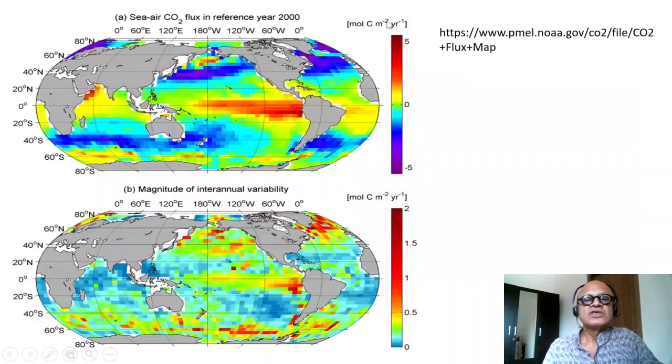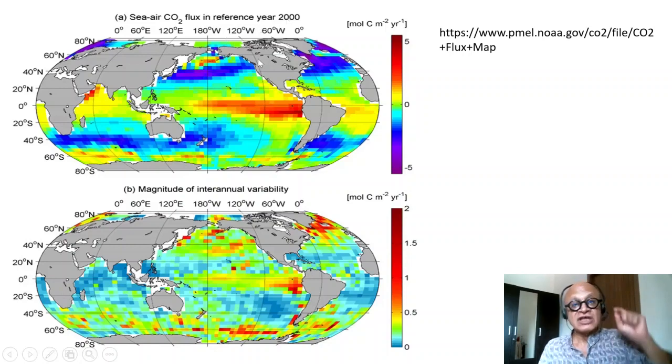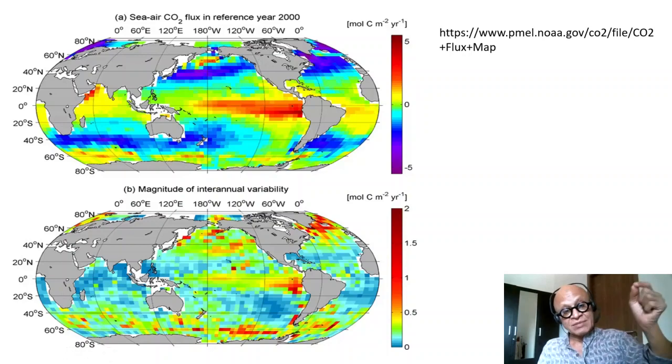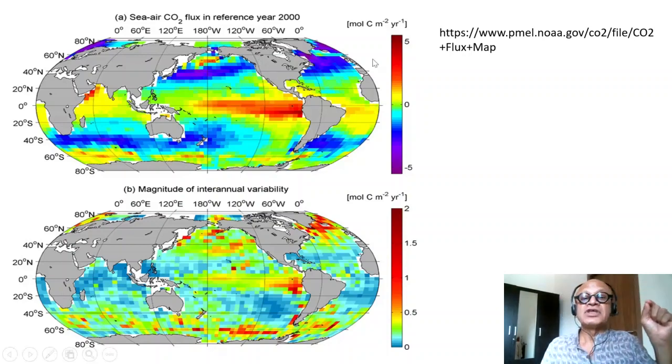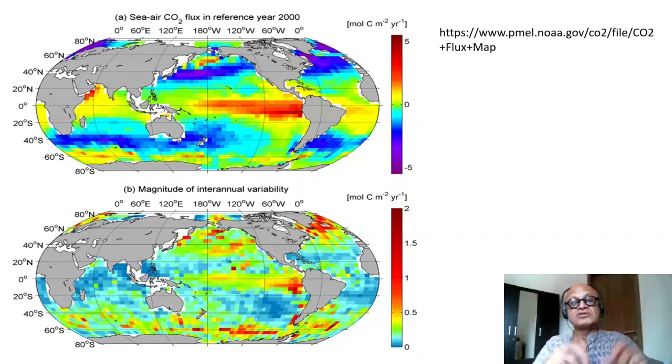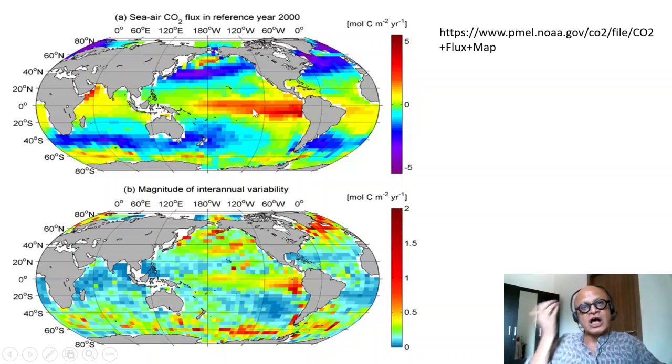This is how the CO2 flux with the reference year of 2000 would look like. This is now exchange of CO2 between the ocean and the atmosphere. It's given in moles of carbon per meter squared per year. And you can see that it is positive here, so it's going out of the ocean. The ocean is taking it up here in the Gulf Stream extension region, the Kuroshio extension region and these southern ocean regions south of the subtropical front.